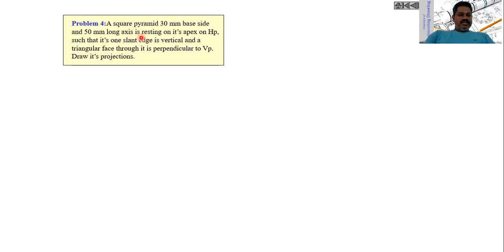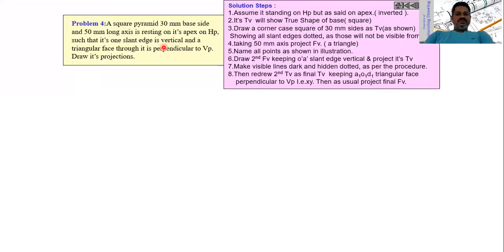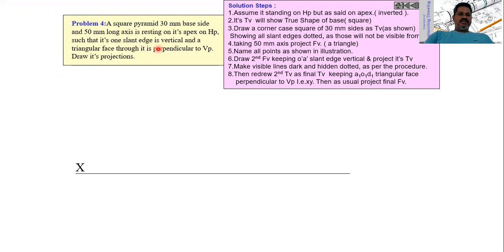To summarize the conditions: one slant edge is perpendicular to the horizontal plane, and one face of the square pyramid is perpendicular to the vertical plane. Since the apex is lying on the horizontal plane, when any object is lying on the horizontal plane, you have to draw the top view first, because the top view will be the true shape.